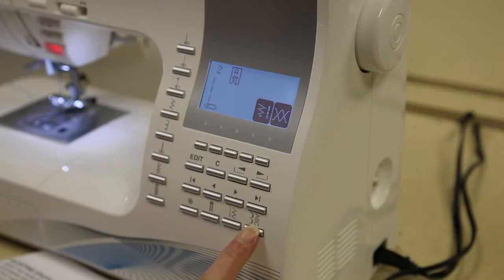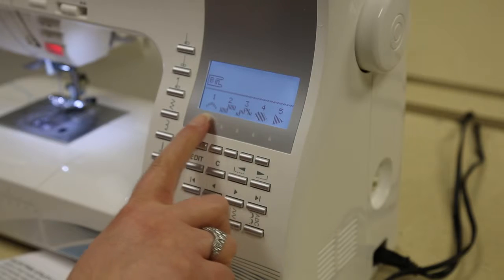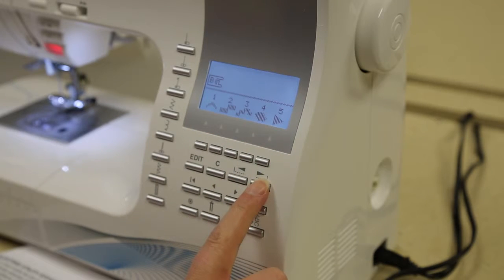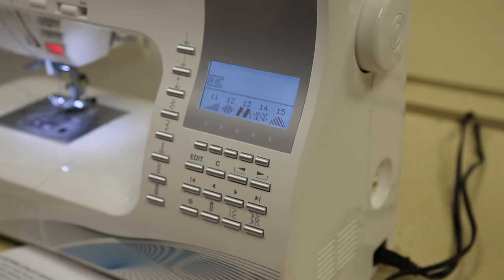Want to do something a little more decorative? Press the decorative and letter stitch button. The first five pattern groups will pop up, and you can use the buttons to scroll back and forth to see additional pattern groups. After you select the group you want, press the scroll buttons to find the next five patterns in that group.